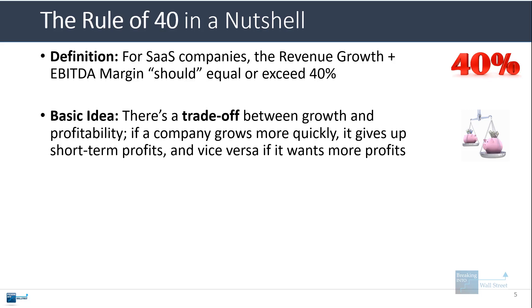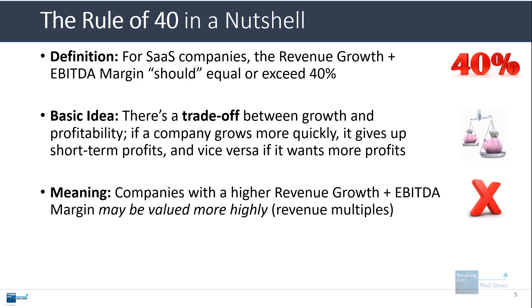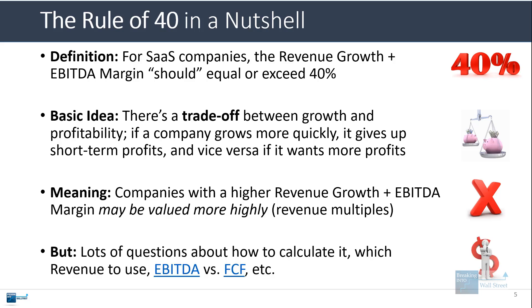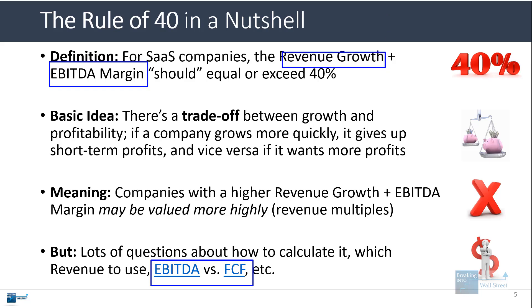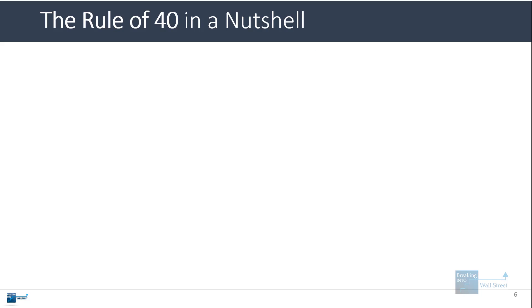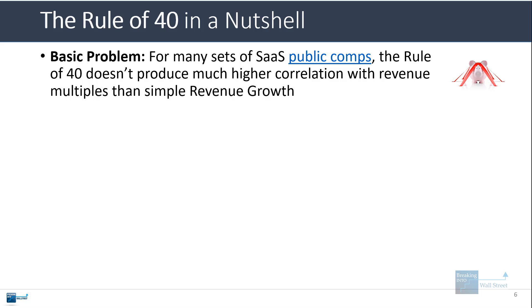The supposed meaning here is that companies with higher revenue growth plus EBITDA margins should be valued more highly in theory, at least if you look at their valuation in terms of revenue multiples. There are lots of questions about how to calculate this because for the profit proportion, some people argue that you should use free cash flow or unlevered free cash flow or variations instead. Some people also say that instead of just standard revenue growth, you should use something like annualized recurring revenue growth or monthly recurring revenue growth or other variations like that.